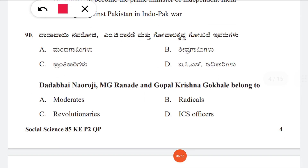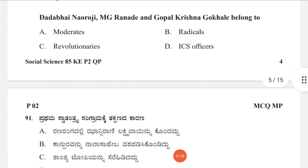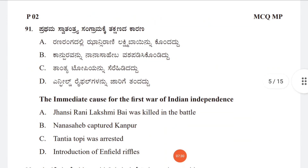Question 90: Dadabhai Naoroji, M.G. Ranade, and Gopal Krishna Gokhale belong to which category of freedom fighters? Options: A: moderates, B: radicals, C: revolutionaries, D: ICS officers. The correct answer is option A, moderates.